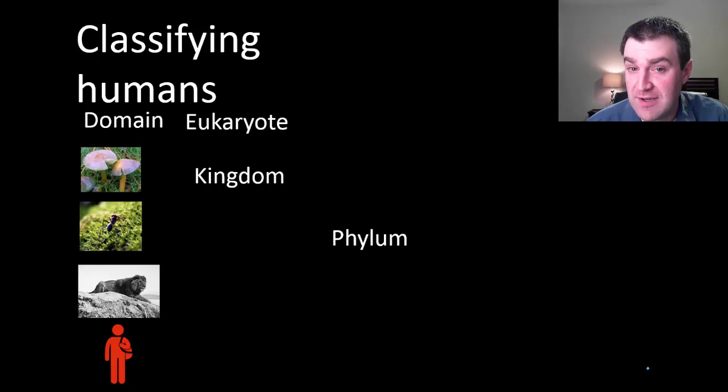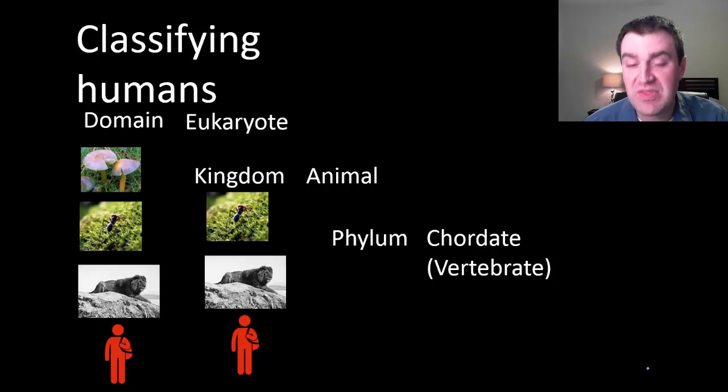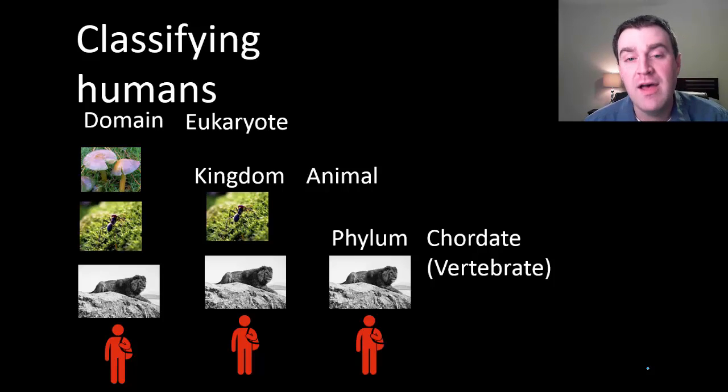We could get more specific by going to our kingdom. We belong to the animal kingdom, so that would knock mushrooms out. If we go further we could say that we're in the chordate phylum, and that would knock ants out because they don't have a backbone like we do and like lions. If we go further we would eventually focus in on us.